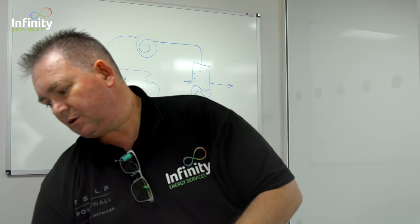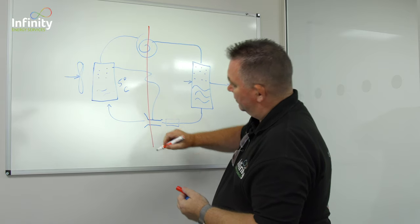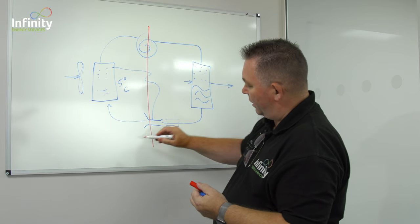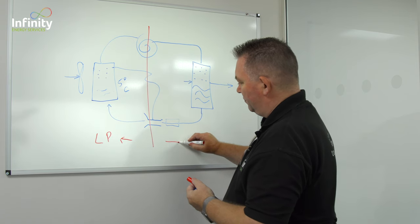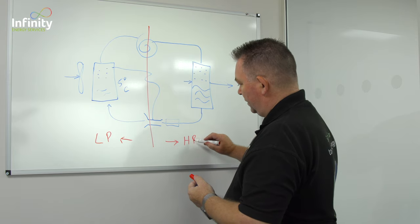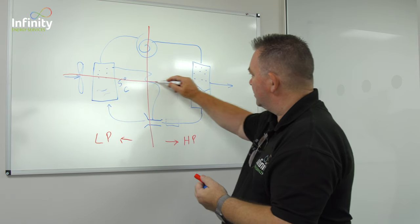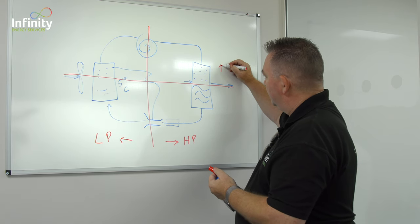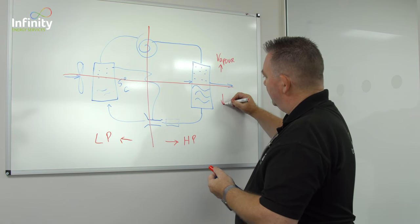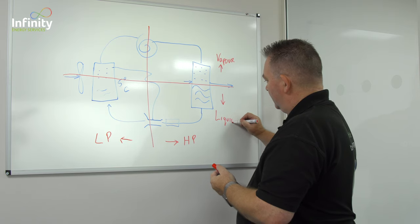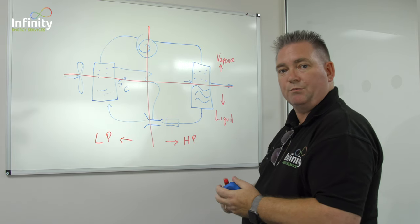So really simple thing to do if we draw it out like this we can put a line straight down. So everything to the left is low pressure and everything to the right is high pressure. So that's nice and simple and then we can bring another line horizontally. Everything above is vapor and everything below is liquid.